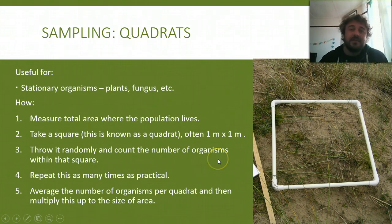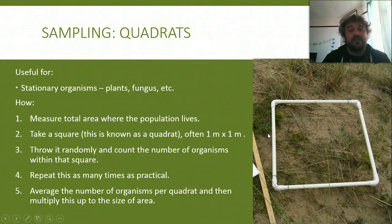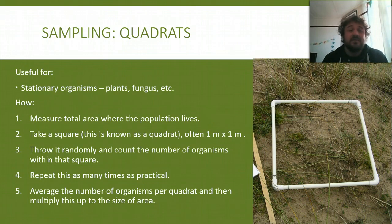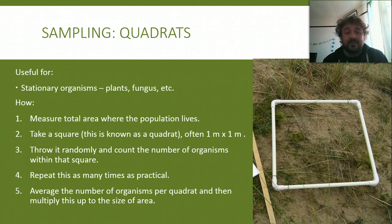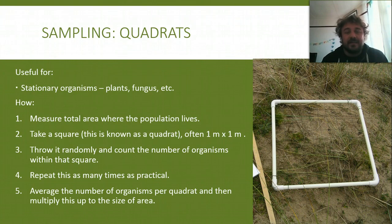You randomly throw the quadrat, or you randomly choose the squares that you're going to look at and count. You count the number of organisms within that square, and you repeat that as many times as is practical. Then you average the number of organisms per quadrat, and then you multiply this up to the size of the area — that tells you roughly how many of those plants, moss, or whatever is in that area.